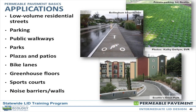What are some of the applications of permeable pavement systems overall? Low-volume residential roads, parking, public walkways, parks, plazas, patios. Out of this list, what do you think was the first use of a permeable pavement-like material? Walls — yeah — England.